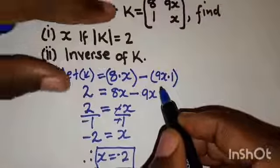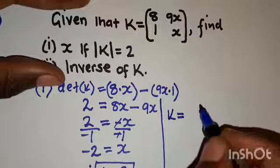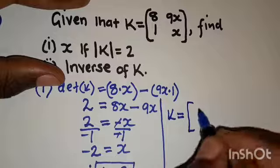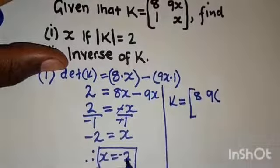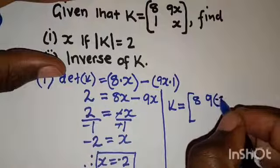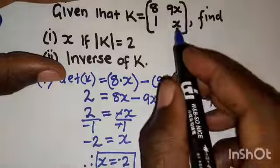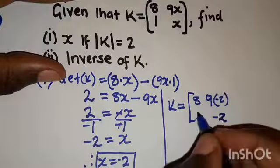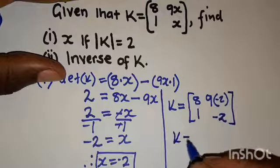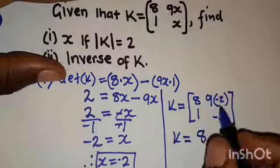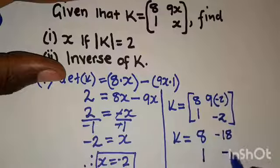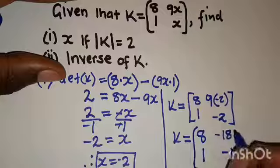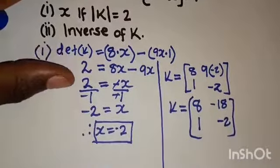This means that matrix K will now look like this. We have 8, 9 times negative 2 — which is negative 18 — and then 1 and negative 2. Since X is negative 2, we replace X with negative 2. This is what matrix K looks like after finding the missing element.